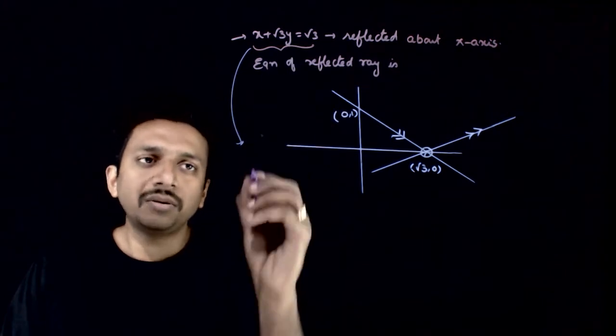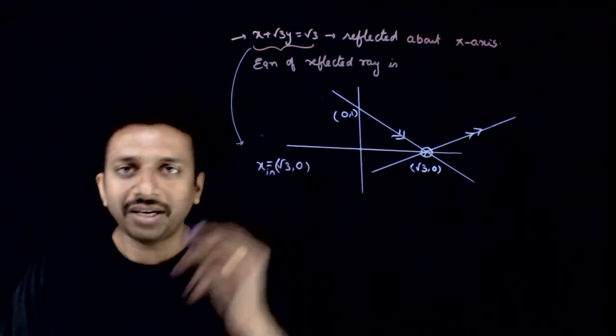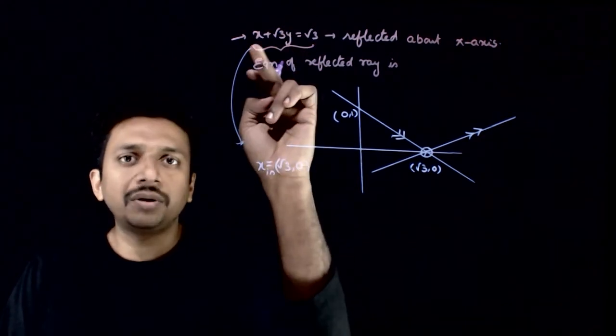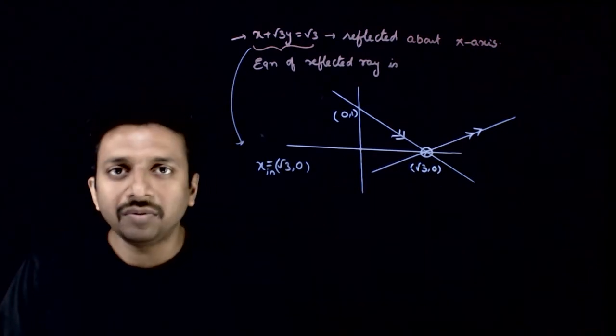Put y equals 0, we get the x-intercept is equal to root 3, 0. That means the reflected ray also passes through root 3, 0.